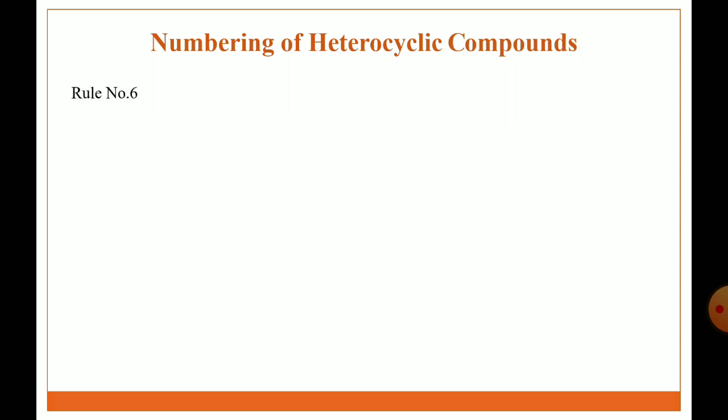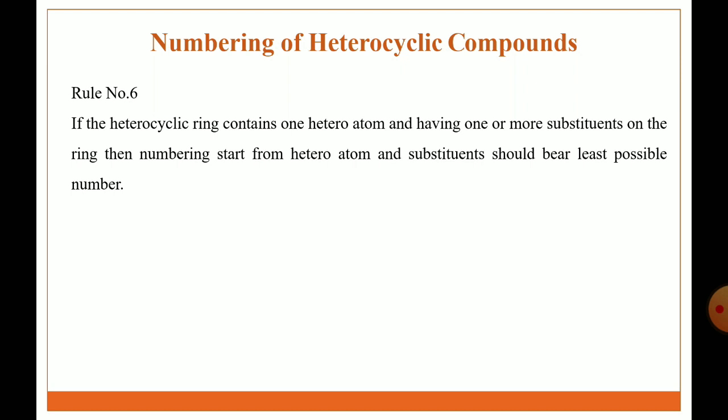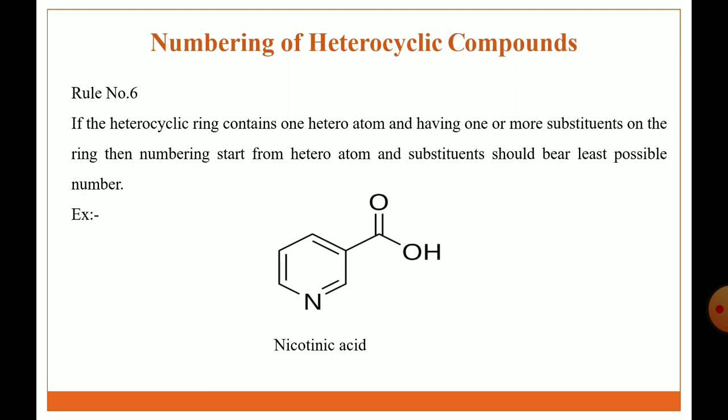Rule 6: if the heterocyclic ring contains one heteroatom and has one or more substituents on the ring, then numbering starts from the heteroatom and substituents should bear the least possible number. For example, this is a heterocyclic ring containing a nitrogen heteroatom. The first number is given to the heteroatom and numbering is given such that the substituent bears the least possible number, that is number three. This is an example of nicotinic acid.